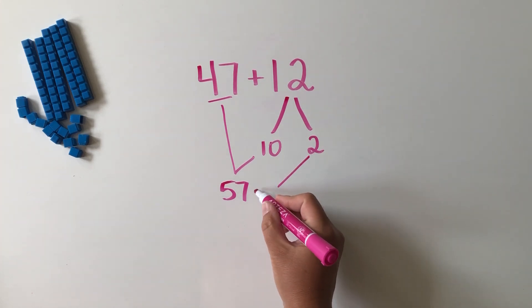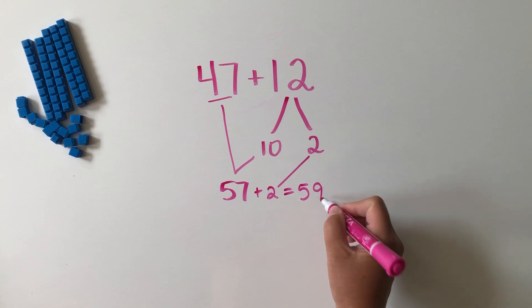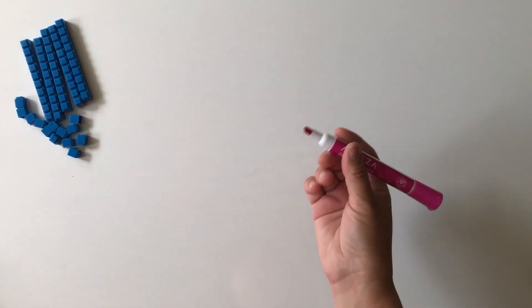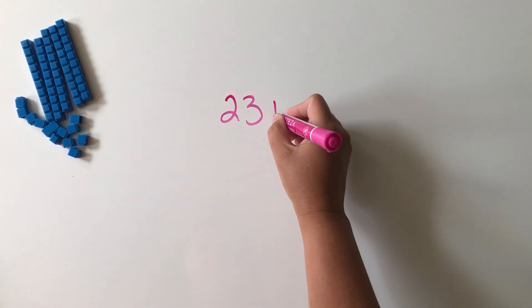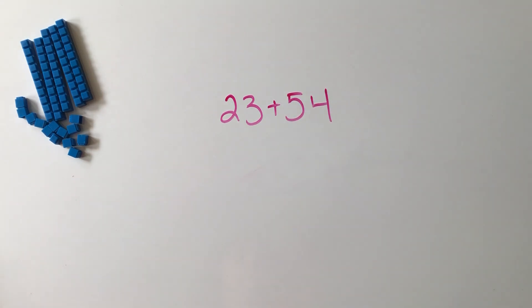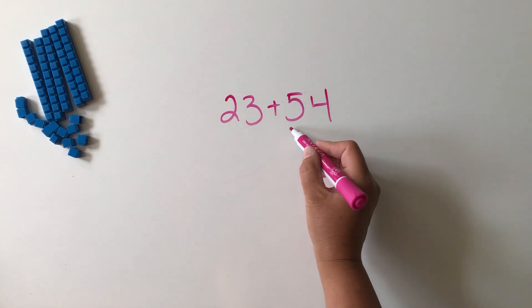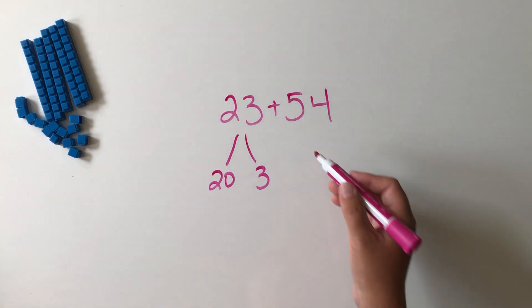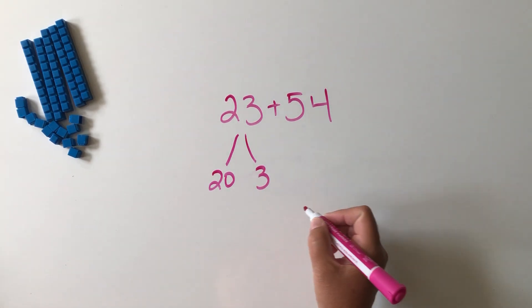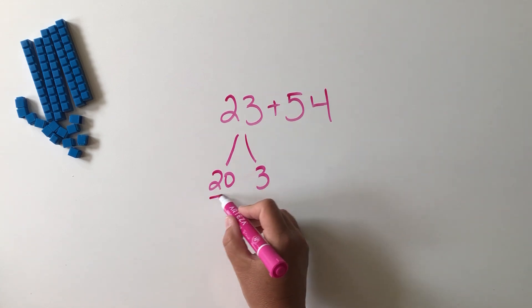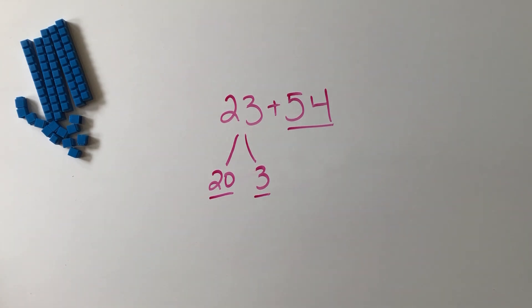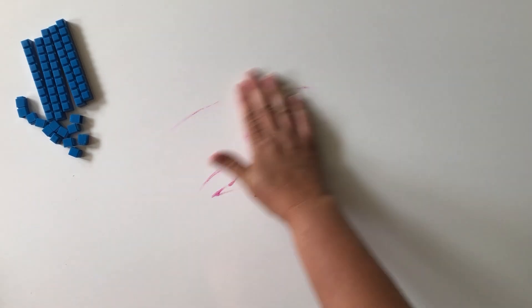Now we have this problem to solve. In this case, I'm still going to start with the bigger number, so I'm going to decompose the 23 into a 20 and a 3, and add it to 54 in parts. I'll start with 54 plus 20 to make 74, and then I'll add on the leftover 3 to make 77.